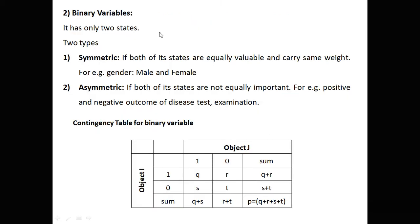Next is the binary variable. As the name indicates, binary means two states. There are two types: symmetric and asymmetric. In symmetric binary variables, both states are equally valuable and carry the same weight — for example, gender, where male and female are both equally important. In asymmetric binary variables, both states are not equally important — for example, a positive or negative outcome of a disease test or exam result. To find similarity or dissimilarity between binary variables, we use a contingency table.